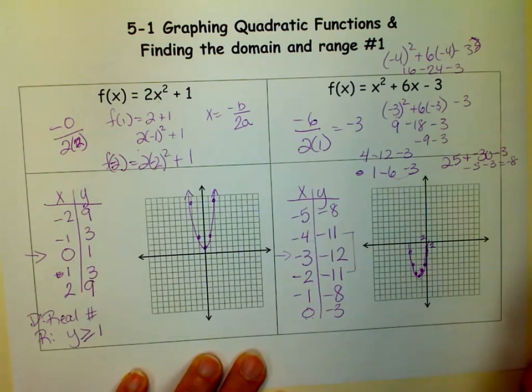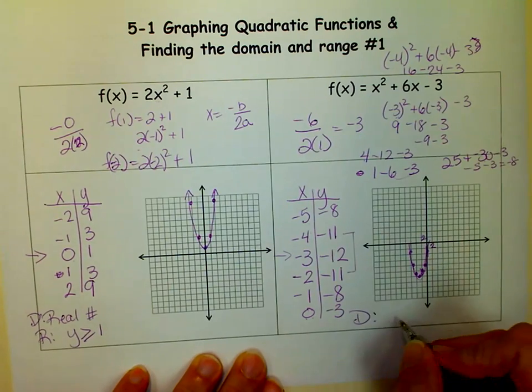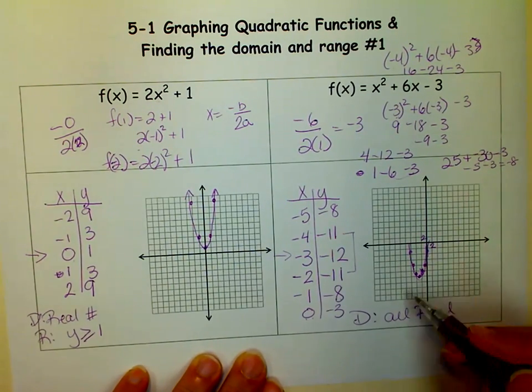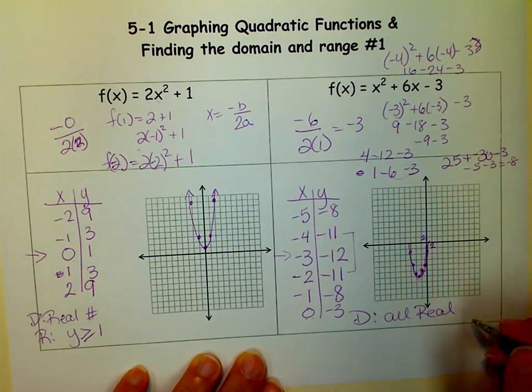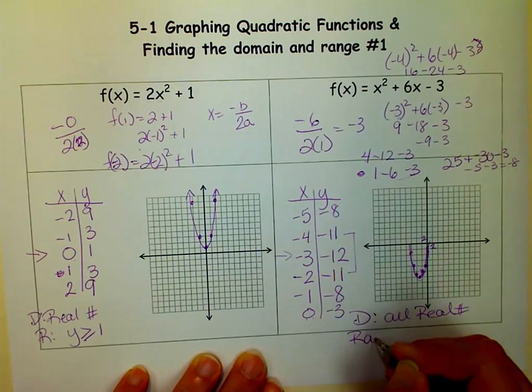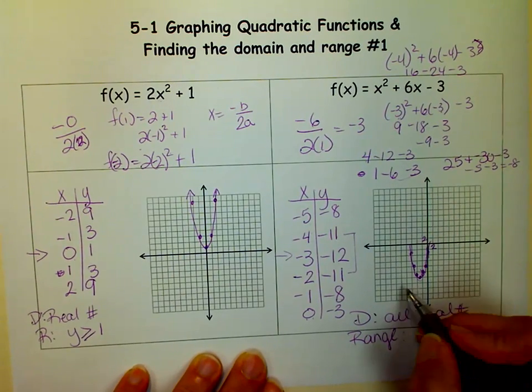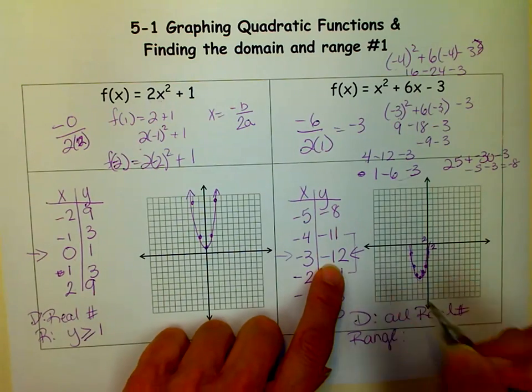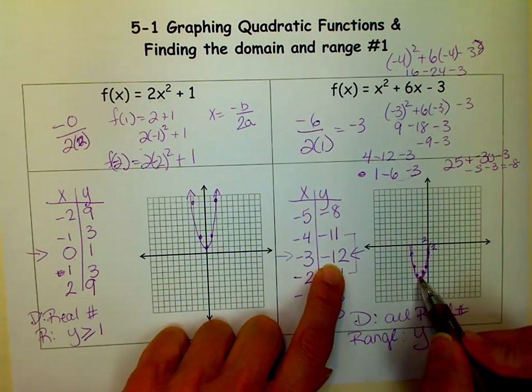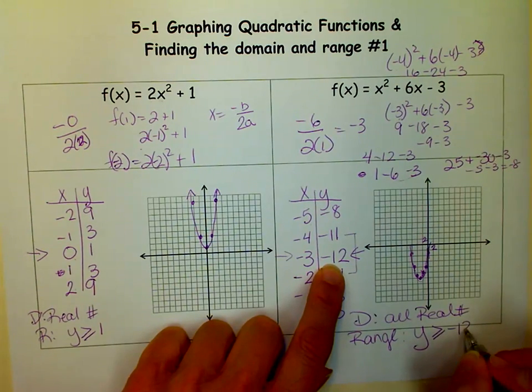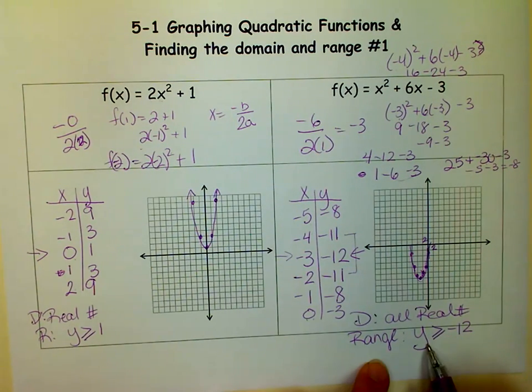But we need to find the domain and range. So remember, domain is all real numbers for all parabolas. Well, the up and down ones, not the sideways ones. All real numbers. And the range, you have to look at your vertex. So the lowest point on the vertex for y is negative 12, and it's going up. It's a minimum. So I know that y has to be greater than or equal to negative 12. So my range is y is greater than or equal to negative 12, and my domain is all real numbers.